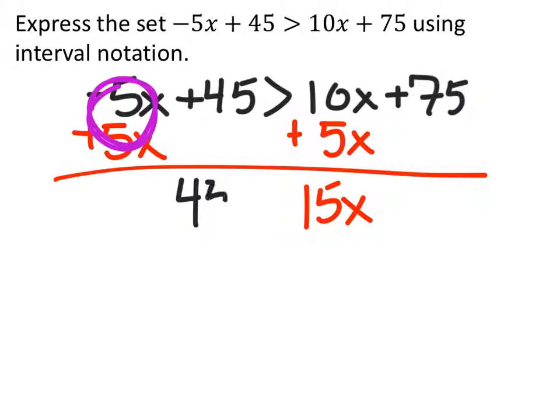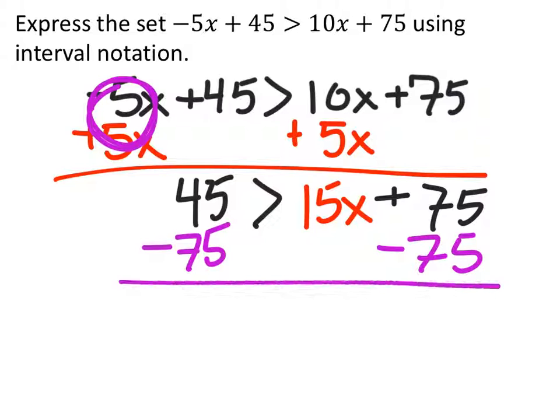Notice it didn't affect anything else, so everything else stays the same. I've indicated that with the black color, and the change has happened in red. But we would need to subtract the 75 as well from both sides so that we can isolate the x on one side of the inequality. So 45 minus 75 is a negative 30. This is greater than 15x.